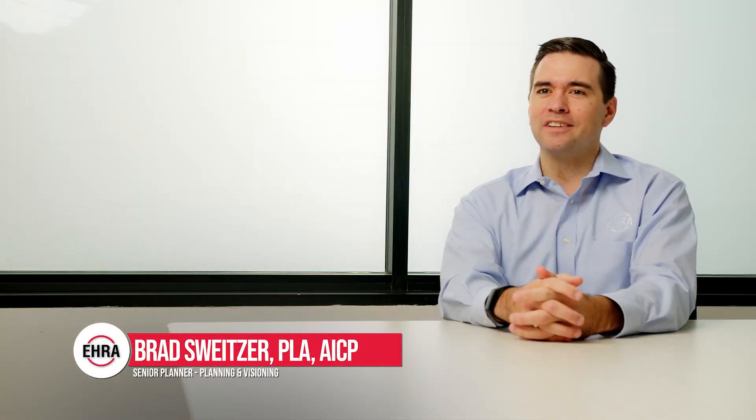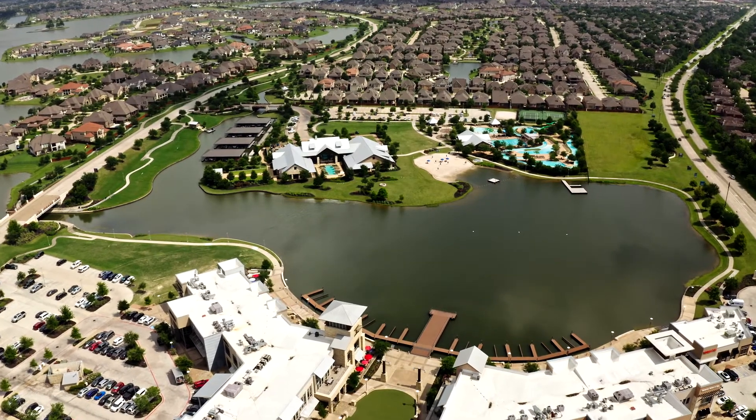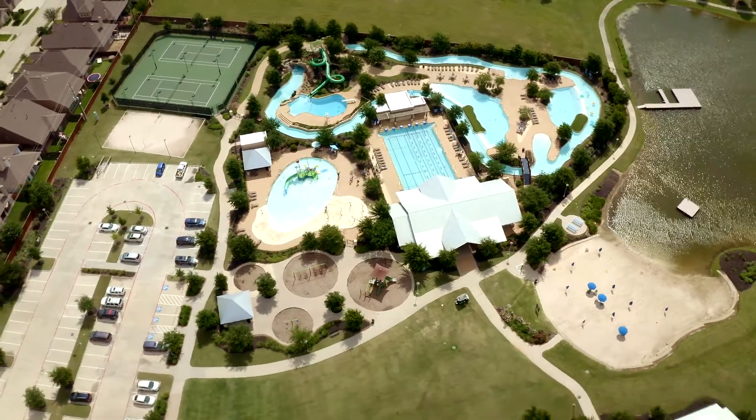We're kind of given a blank slate a lot of times and just told here are some of the constraints we're dealing with. You have a major thoroughfare going through the project, you need to deal with the floodplain, and then we get out the trace paper and start sketching and coming up with what we really think the project could look like. We design all that, show it to the clients, get their approval, get their feedback, make changes, and eventually that turns into something that the engineers take.